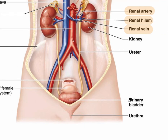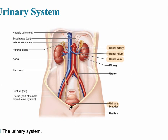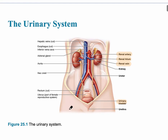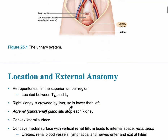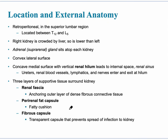The urinary bladder is approximately located where the pubic symphysis is, where the two pubic bones form a union, so a crush injury would specifically affect a person's bladder. The kidneys are retroperitoneally located in the superior lumbar region from about T12 to L5. The right kidney is crowded by the liver, so it sits a little lower than the left. The adrenal glands are also called the suprarenal glands because they sit on top of the kidney.